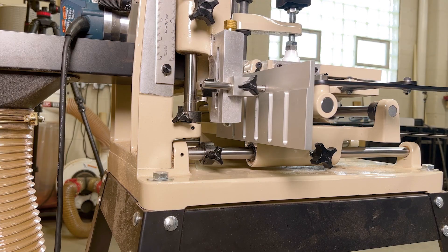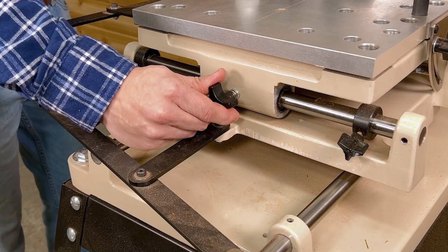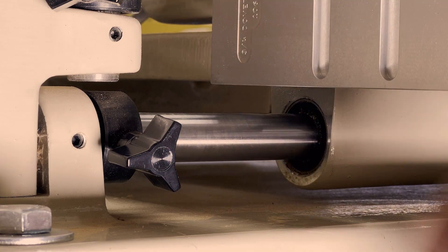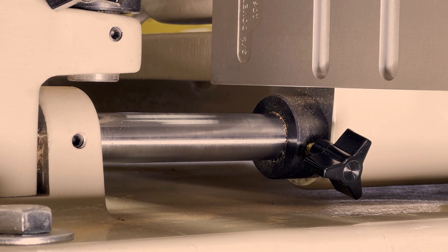Place the stylus in the center slot of the tails template and lock the horizontal table's left to right travel in place. Slide the forward stop up against the front edge of the horizontal table and lock it in place.